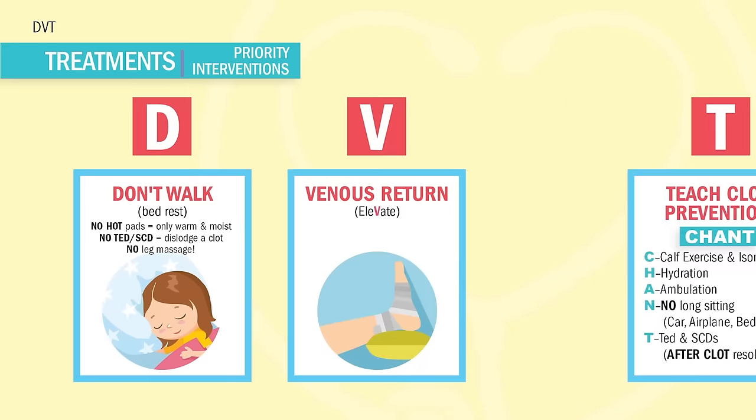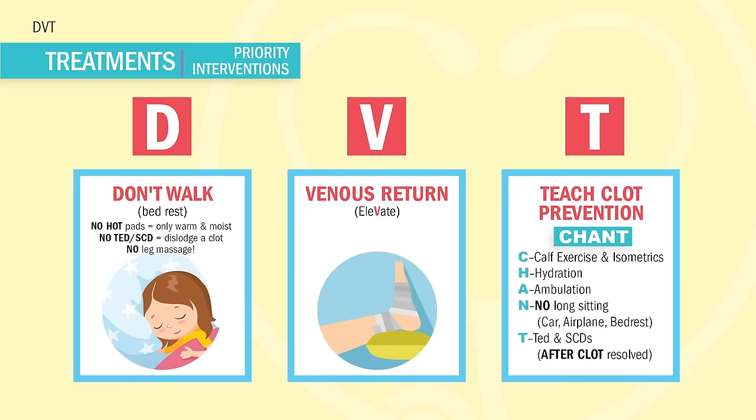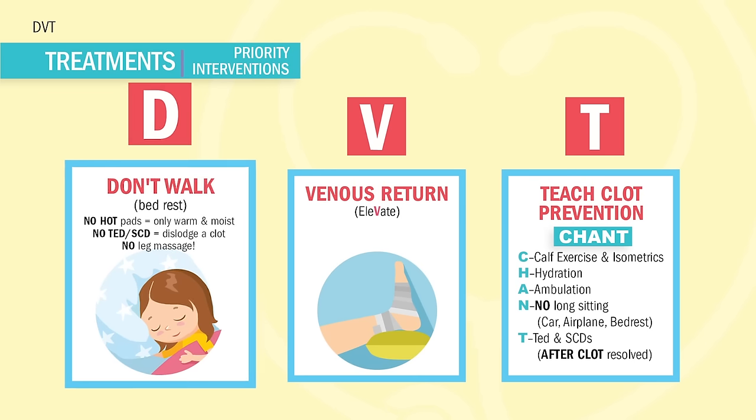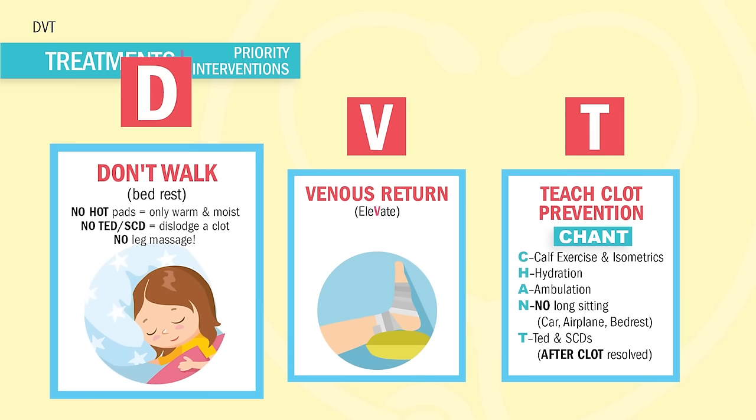So use the acronym DVT to remember the priority nursing interventions. D is for don't walk or move too fast — this means bed rest. That clot is like a ticking time bomb waiting to get loose. So no hot pad, only warm and moist pad. And everyone always asks why — well guys, what does heat do? Is heat a vasoconstrictor, meaning it squeezes the blood vessels?